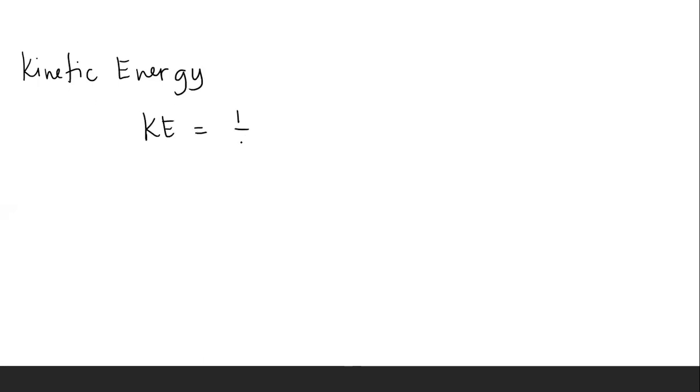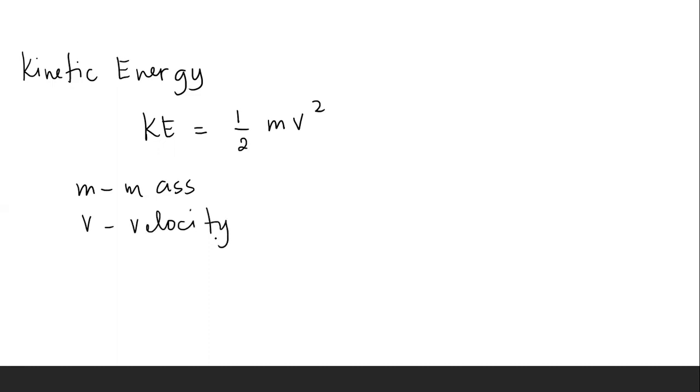Then we have kinetic energy — energy in motion. The formula for kinetic energy is equal to one-half mv squared, where m is the mass and v is the velocity. The units are the same as potential energy.